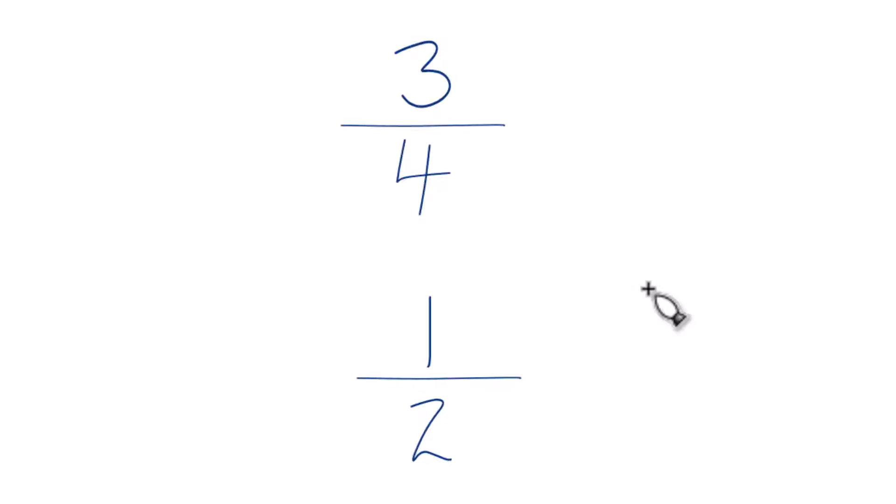So which one of these two fractions is greater? 3 fourths or 1 half? And how do you tell? You could just divide 3 by 4 on a calculator, then divide 1 by 2 and compare the decimals. That would work.